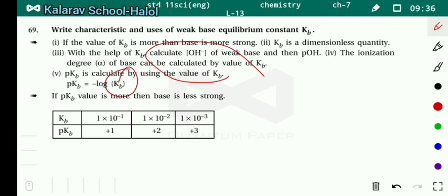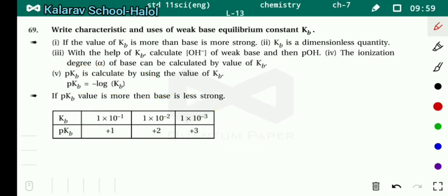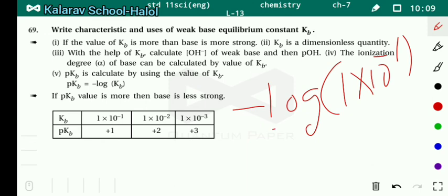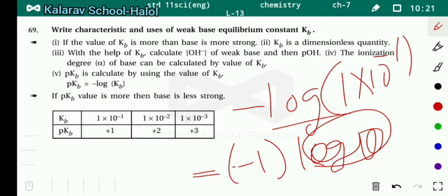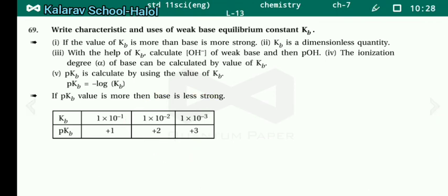pKb is calculated using the value of Kb: pKb equals minus log Kb. For example, for the first entry in the table with Kb equals 1×10⁻¹: minus log(1×10⁻¹) gives log 1 equals 0, and minus log 10⁻¹ gives minus times −1 times log 10 equals plus 1. So pKb equals 1. Calculate the second and third entries the same way.